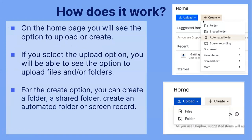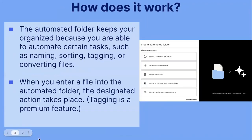This is what it looks like when you're selecting either upload or create. The automated folder keeps you organized because you are able to automate certain tasks such as naming, sorting, tagging, or converting files. When you enter a file into the automated folder, the designated action takes place. Something to note is that tagging is a premium feature, but all the other options you can do with the basic plan.